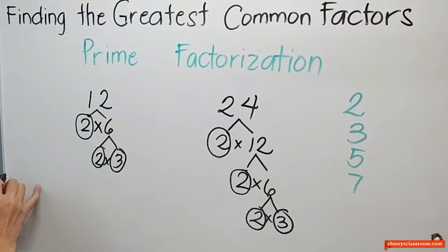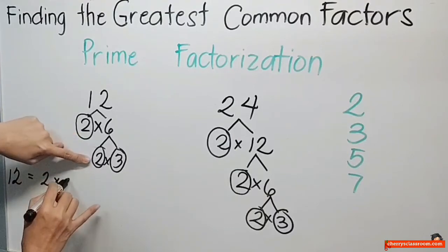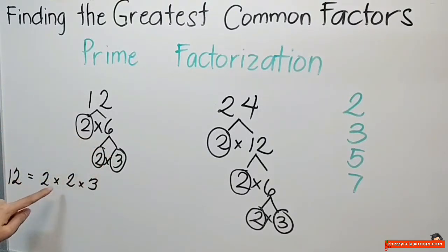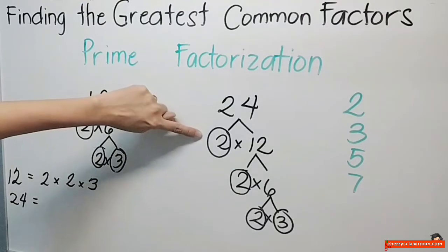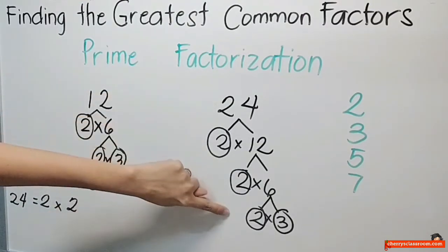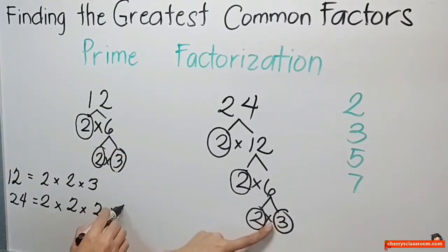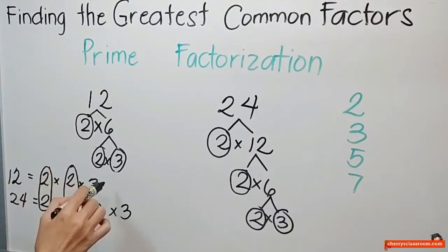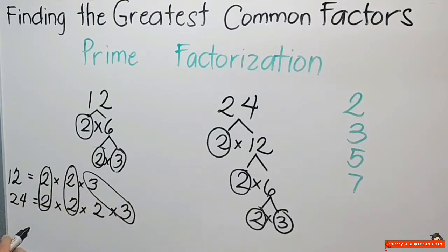Hindi pa po. So, ililista ko ngayon ang mga prime nila. So, 2 times 2 times 3. 2 times 2 times 3. So, ito siya. Ito siya. Ito siya. Ngayon yung 24 naman. Okay. Ngayon. Bibilugan ko lahat ng common. Ayan. So, ang mga common ay ang 2 times 2 at ang 3.